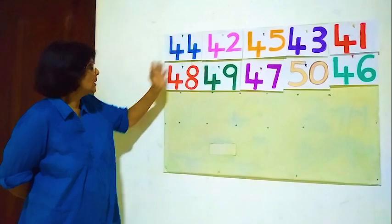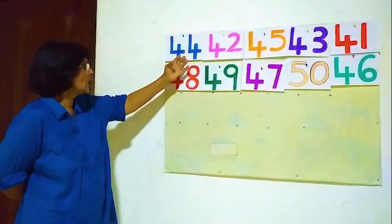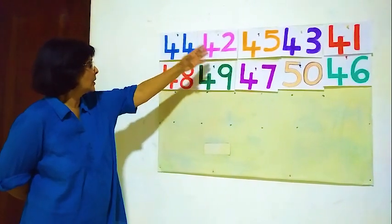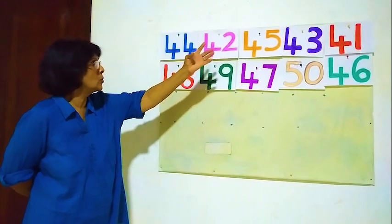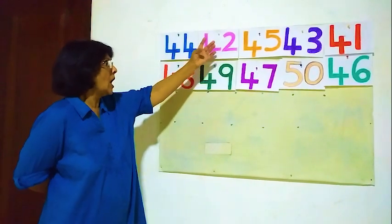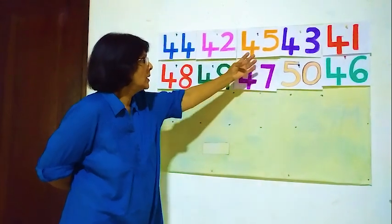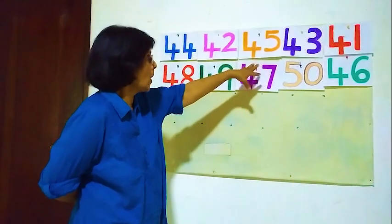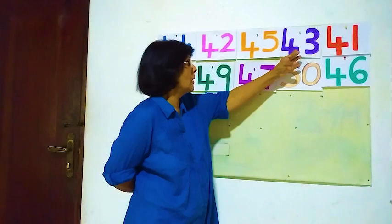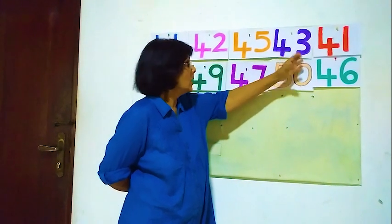Now here all the numbers are mixed. Here 44 is first, then after 44, 42 comes — that can't be there. After 42, 45 is there — that's also wrong. After 45, 43 is there — that's wrong too.